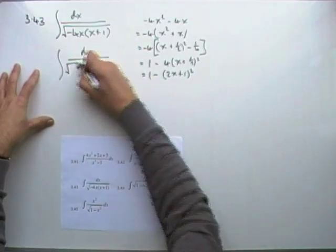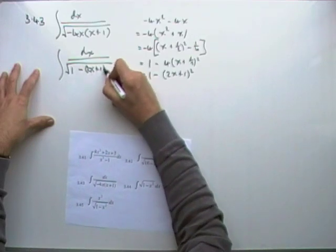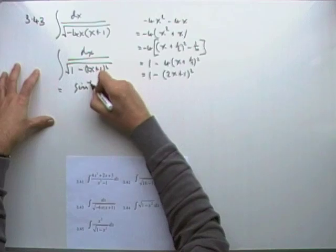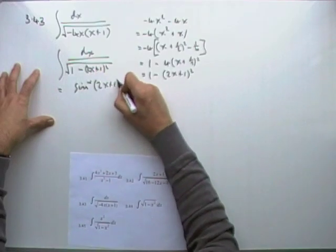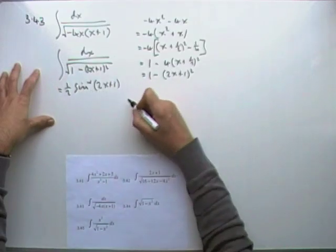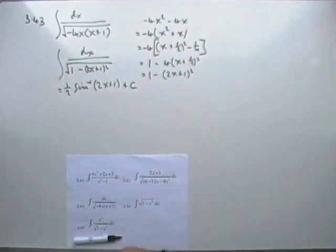Because all you've got here then is the square root of 1 - (2x + 1)², which is just straight away inverse sine. Inverse sine of (2x + 1). Derivative of that is 2, so divide by 2. So a half of inverse sine of (2x + 1) plus C. That one's nice and simple.